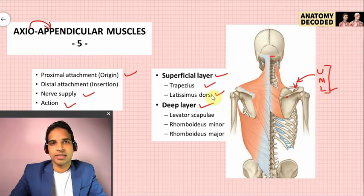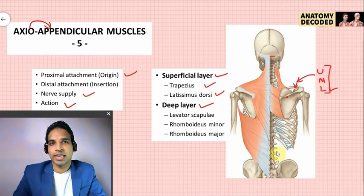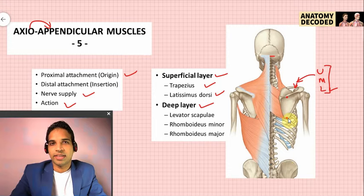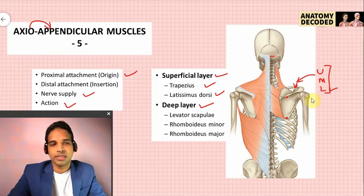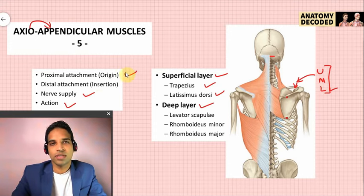Latissimus dorsi has extensive proximal attachment from the iliac crest (posterior aspect), the posterior lamina of thoracolumbar fascia, the lower six spines of the thoracic vertebrae, and a small attachment from the inferior angle of the scapula. Its distal attachment is the floor of the bicipital groove, also referred to as the intertubercular sulcus. Nerve supply is the thoracodorsal nerve with root value C6, C7, and C8.